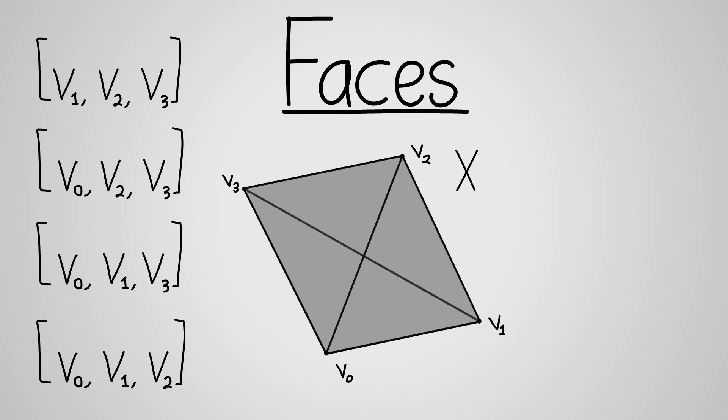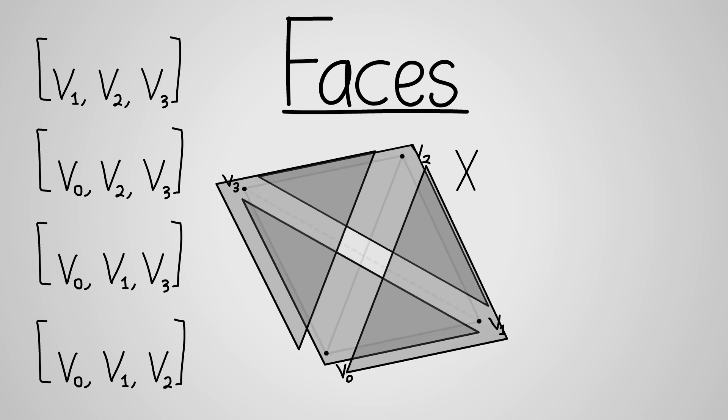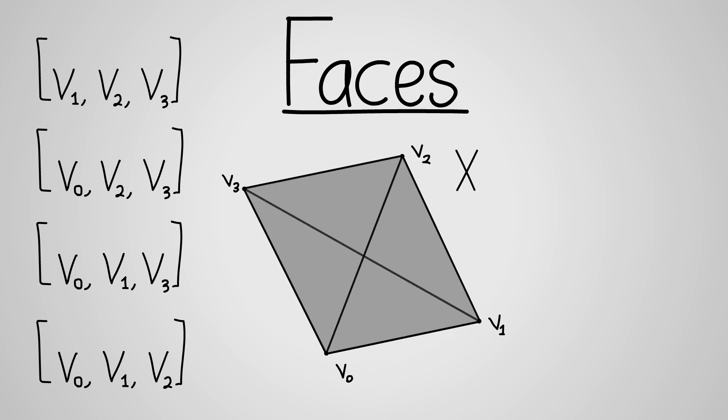Together, the faces of x cover the whole boundary of x. The boundary of an n simplex, then, consists of n-1 simplices. This is important. If we look to the boundary of a simplex, we still end up talking about simplices, and even simpler simplices too, since they have a lower dimension.